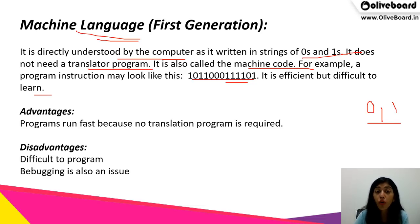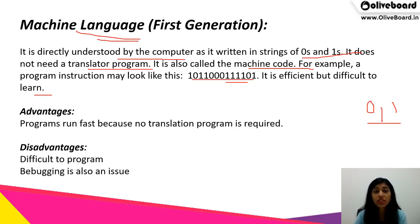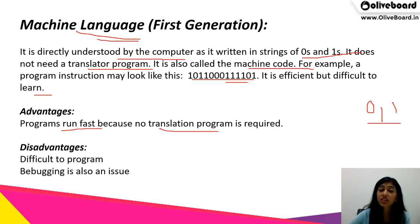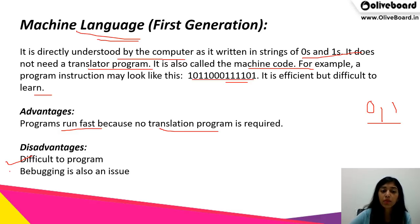We cannot remember all the zeros and ones for all the letters or words we want to use on the computer. One advantage of machine language is that programs run fast because no translation program is required. However, the disadvantages are that it is difficult to program since we cannot remember the codes, and debugging is also an issue.